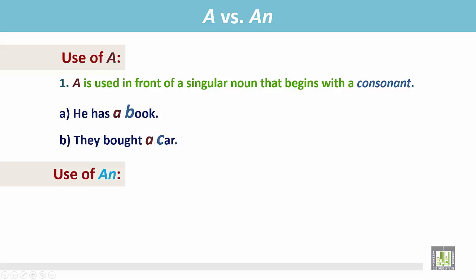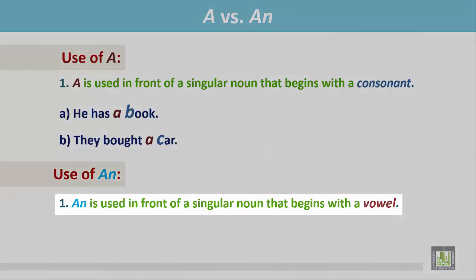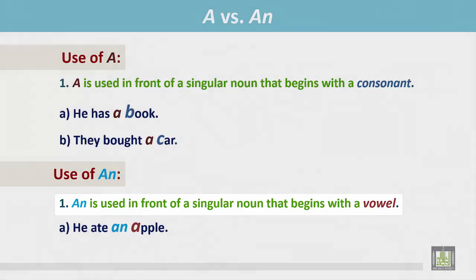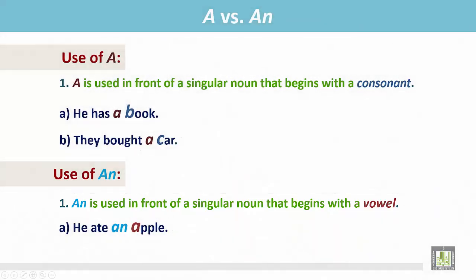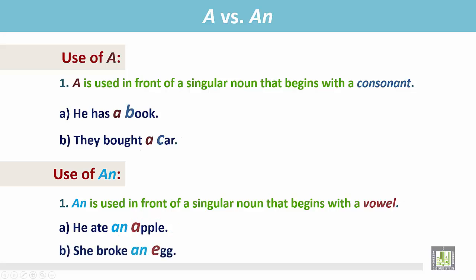Use of AN. AN is used in front of a singular noun that begins with a vowel. He ate an apple. The word apple begins with the vowel A, and we place AN before the word apple. She broke an egg. The word egg begins with the vowel E, and we place AN before the word egg.